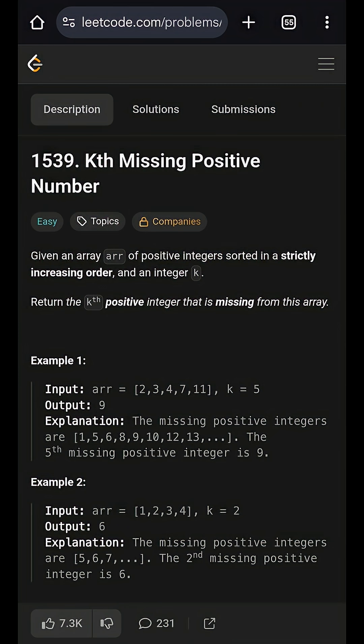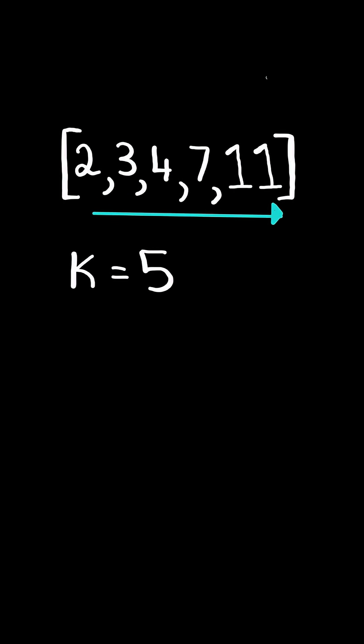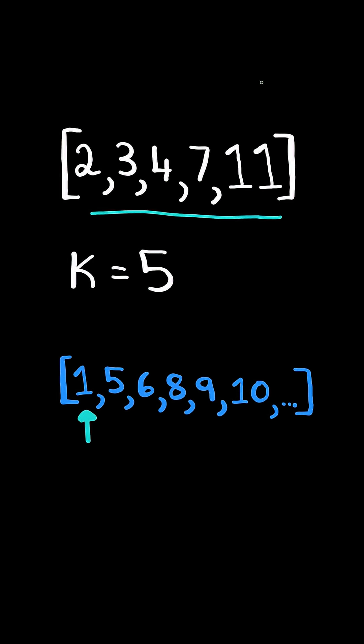Kth missing positive number. Given an array sorted in strictly increasing order, consider all the numbers that are missing in the array. One is not in the list, five is not in the list, and so on. Return the kth positive integer that is missing from the list. We will solve this in O of log n time using binary search.